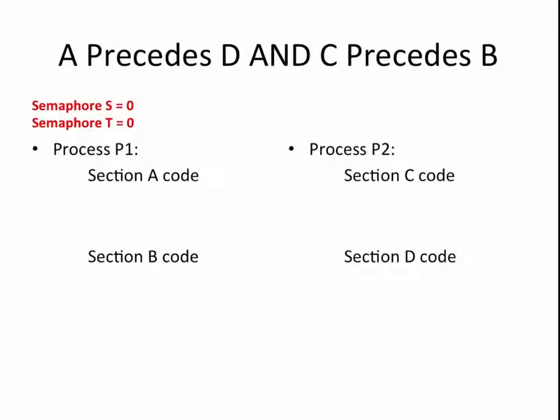To achieve this, we need to use two semaphores, say S and T, and initialize them to zero. After the first section of a process completes, it should signal to the other process that it may begin its second section of code, provided that it has already completed its first section of code. To ensure that it has already completed its first section of code, we place the signal calls between the two sections of code in each process. In addition to signaling the other process that it may proceed, each of the processes needs to wait for the semaphore that the other process is signaling. This combination of signal and wait ensures that sections A and C of the code will run before sections B and D.